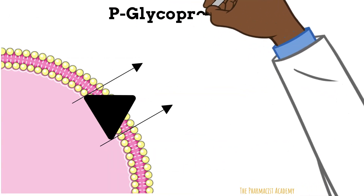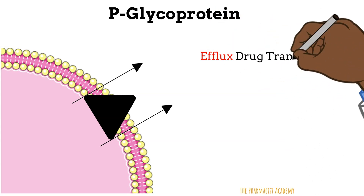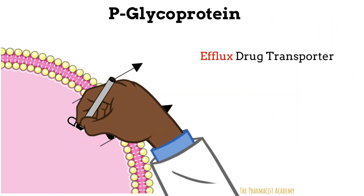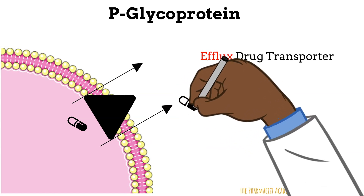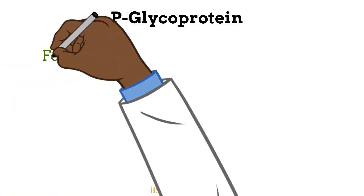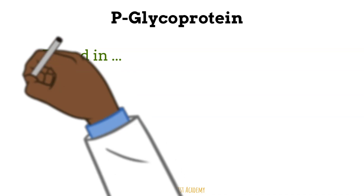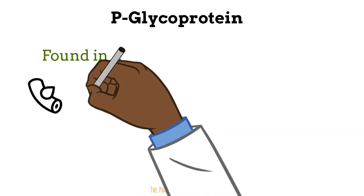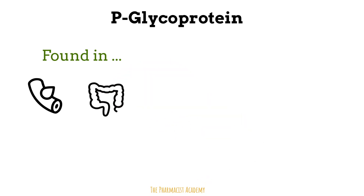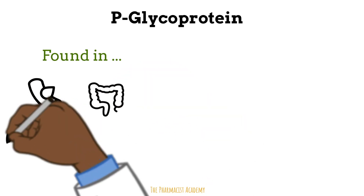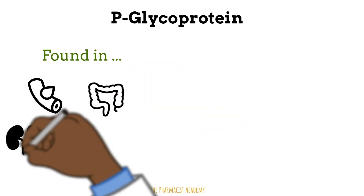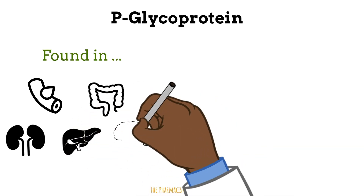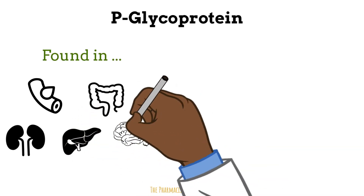This is kind of how the P-glycoproteins look. It's known as an efflux drug transporter, so its job is to kick the drugs from inside the cell to the outside. Now these proteins can be found in different parts of your body. It may line the blood vessels and kick drugs out into the blood, or in the colon where it will kick the drugs back into the colon to be excreted. Same for the kidneys, the liver, and it helps protect the brain from any foreign substances also.